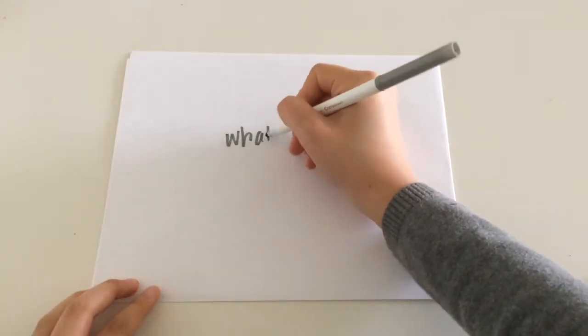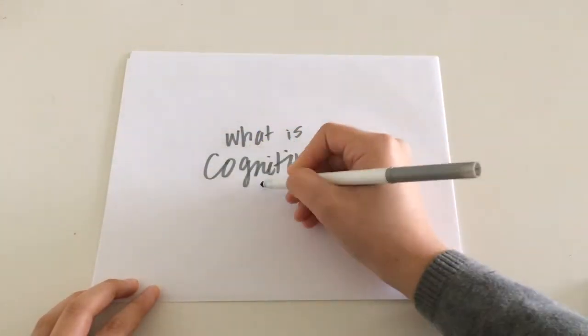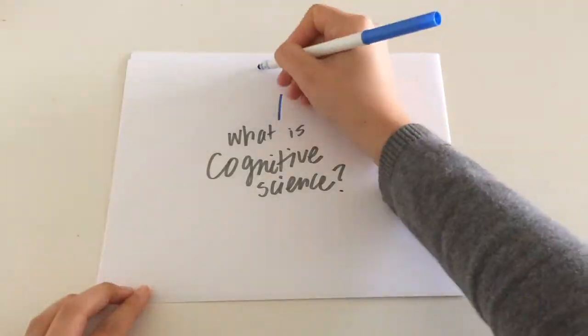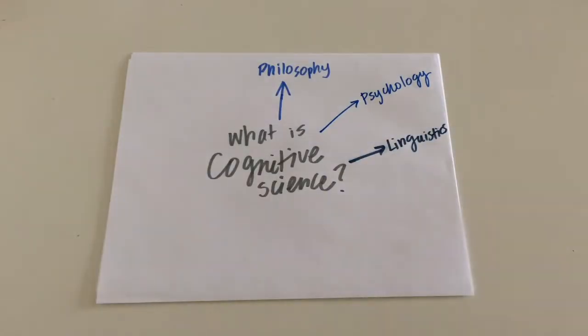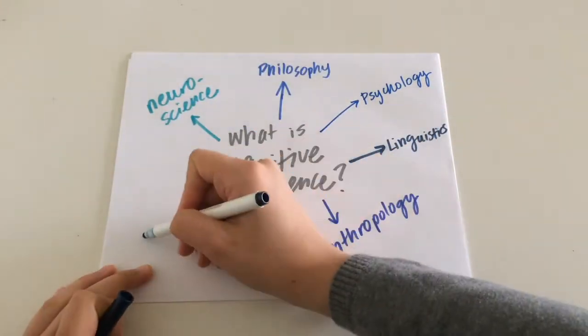What is cognitive science? As we covered in our previous video, it is the holistic study of the mind that pulls from other disciplines, namely philosophy, psychology, linguistics, neuroscience, anthropology, and computer science.